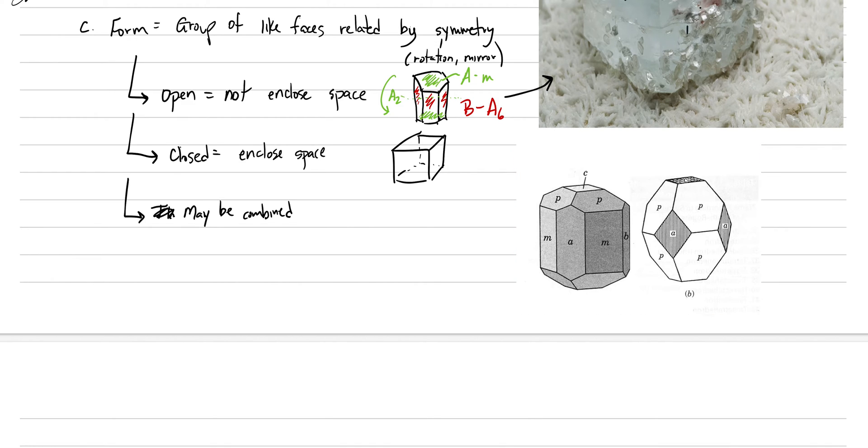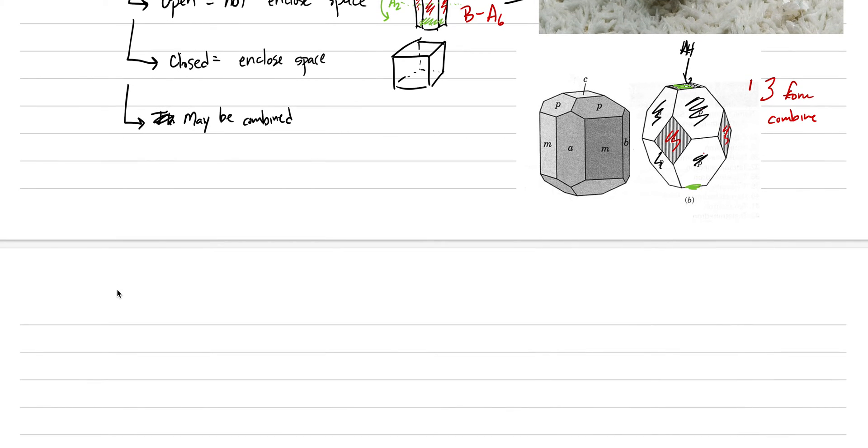When we see combinations of forms, let's just look at these examples right here. So here are two examples. Here we have one face, two face. They're all related to one another by a four-fold axis of symmetry. Here's an A4. Then that's an open face. C and C is another. And A, and then you can imagine there's some on the backside. So this whole shape has three forms combined to make the entire crystal. This is the norm rather than the exception.